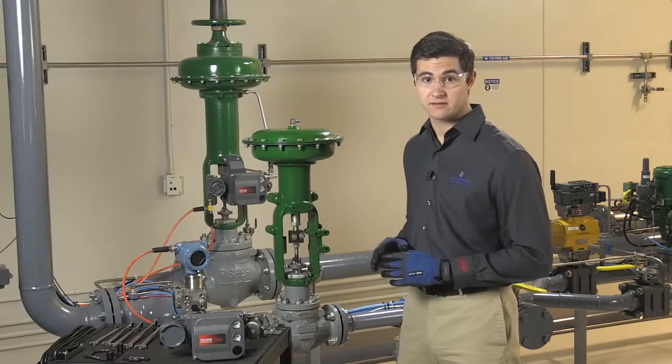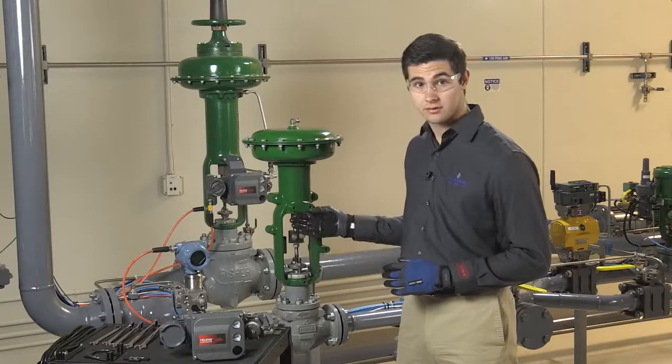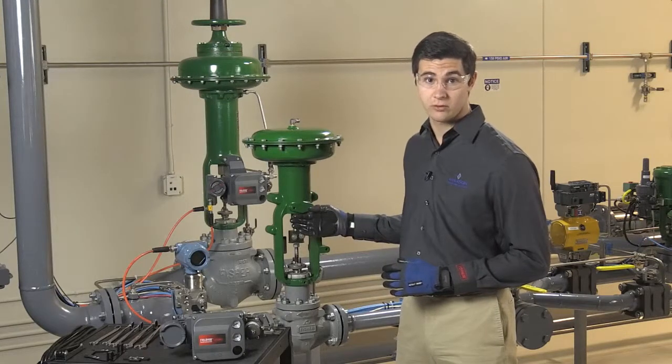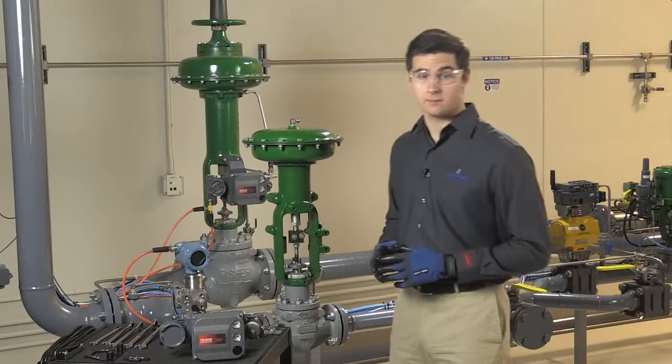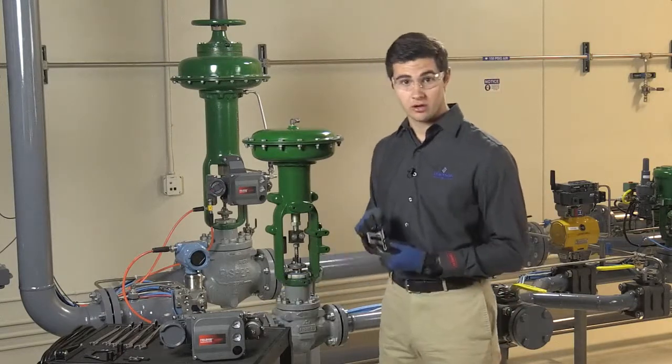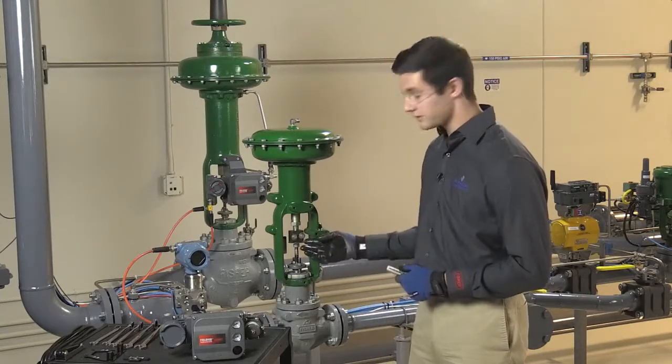Since the 657 size i is fail up, the actuator stem should be fully retracted. With the actuator in fail up position, we're going to install the connector arm onto the coupling block.